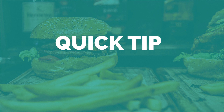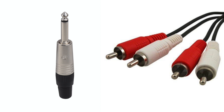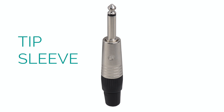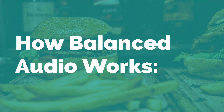Because they're so susceptible to noise, unbalanced cables typically don't run over 25 feet. Here's a quick tip though: if you have to run unbalanced audio cables near power cables, don't run them parallel — have them cross at one perpendicular point. That's a much better way to do it. Commonly used unbalanced cables are TS and RCA cables. TS stands for tip sleeve — the tip connects to the signal wire and the sleeve connects to the ground wire.